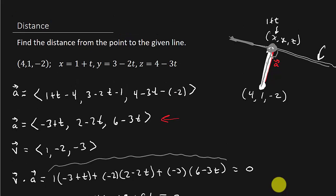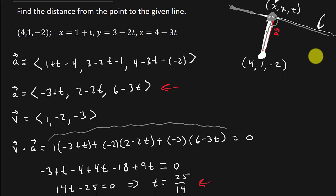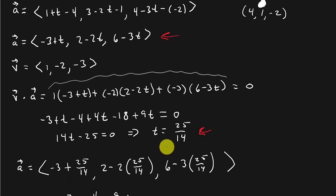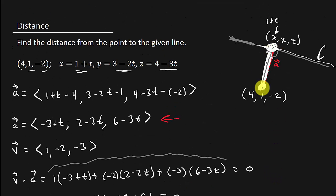Basically what you're doing is parameterizing the vector from the external point to the line in terms of t, then doing the dot product with the direction vector, setting it equal to zero to find t, and plugging back in to get the perpendicular vector whose magnitude is the distance. I hope this video helped — check out my other videos, give me a like, share, subscribe, comment, and I'll see y'all in the next video. Later.